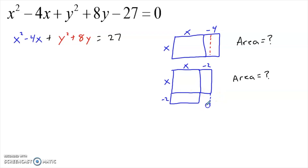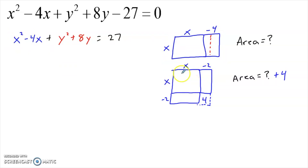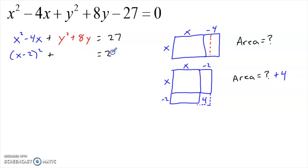I split that -4x rectangle right down the middle and bring the right half to the bottom, getting almost an (x - 2) by (x - 2) square. The area hasn't changed yet. To complete the square, I fill in the bottom right corner — adding 4 to the area. So x squared minus 4x can be replaced by (x - 2) squared, as long as I add 4 to the right-hand side to balance.